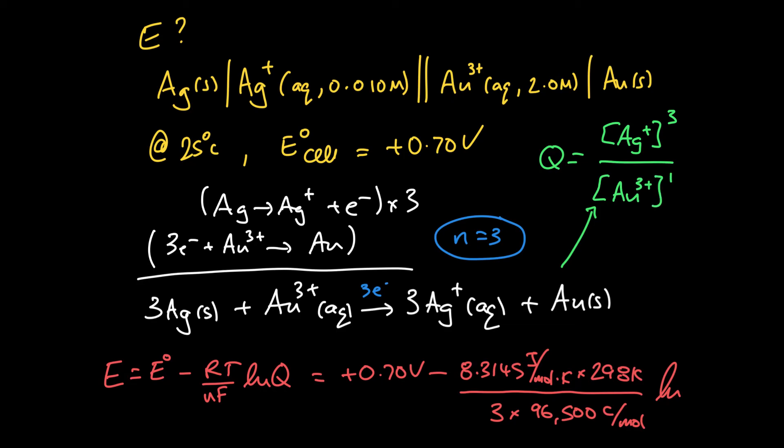So at the end of the day, when we take the logarithm here, we've got the concentration of silver cubed. So silver was 0.01, we're cubing it, and we're dividing by gold, which was 2. And so we can see that, what's that going to be? So that is going to be smaller than 1. When we take the logarithm of a number smaller than 1, it's going to give us a negative. Two negatives make a positive. So we can see any time the reaction quotient is smaller than 1, it's going to lead to an increase in the cell voltage.